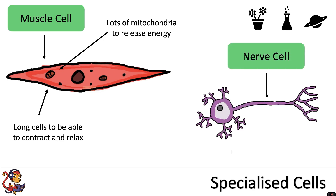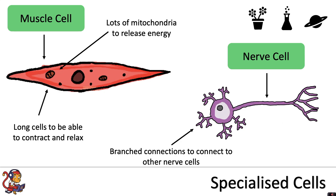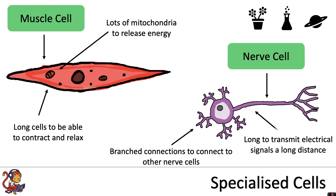The nerve cell has branch connections to connect to other nerve cells, and it is very long to be able to transmit electrical signals a long distance.